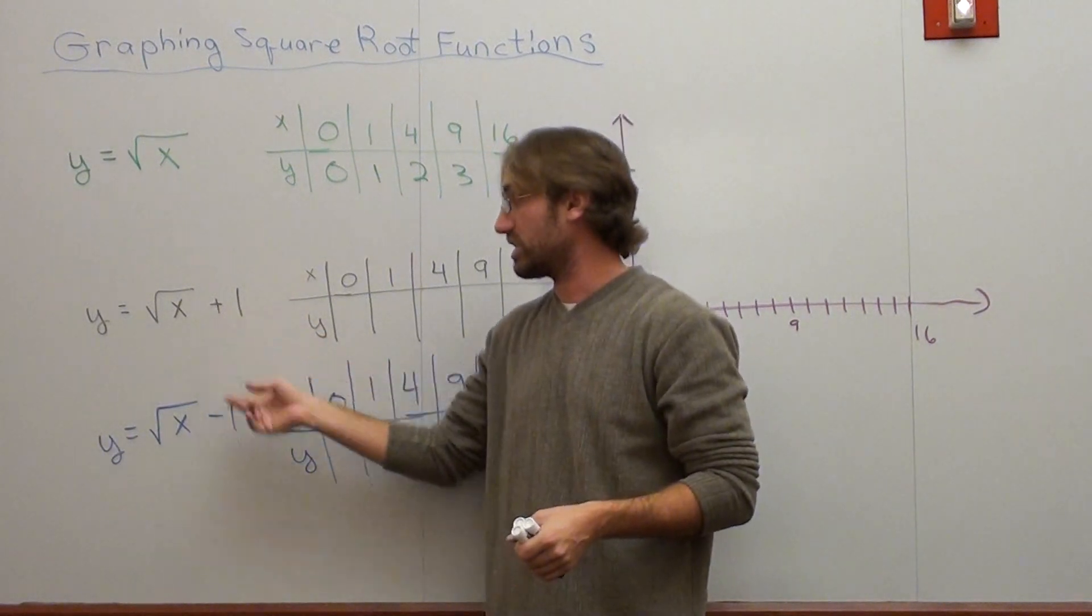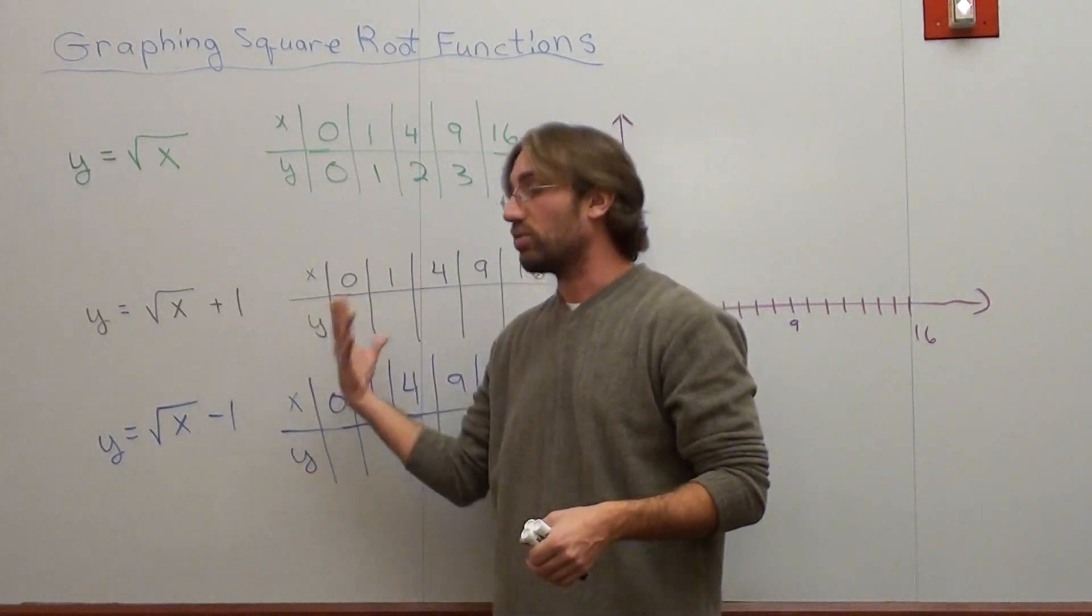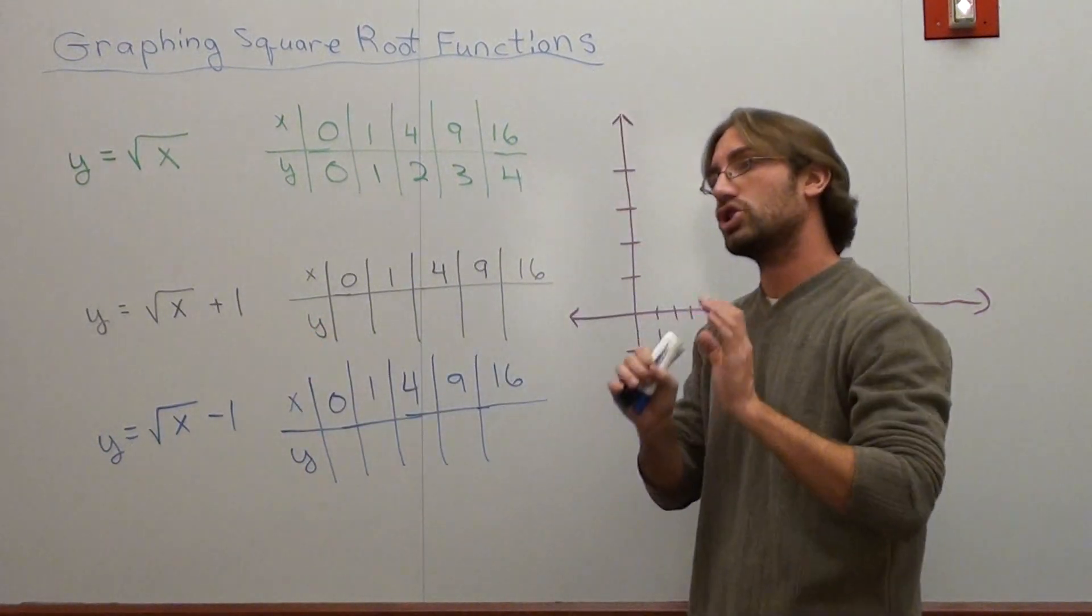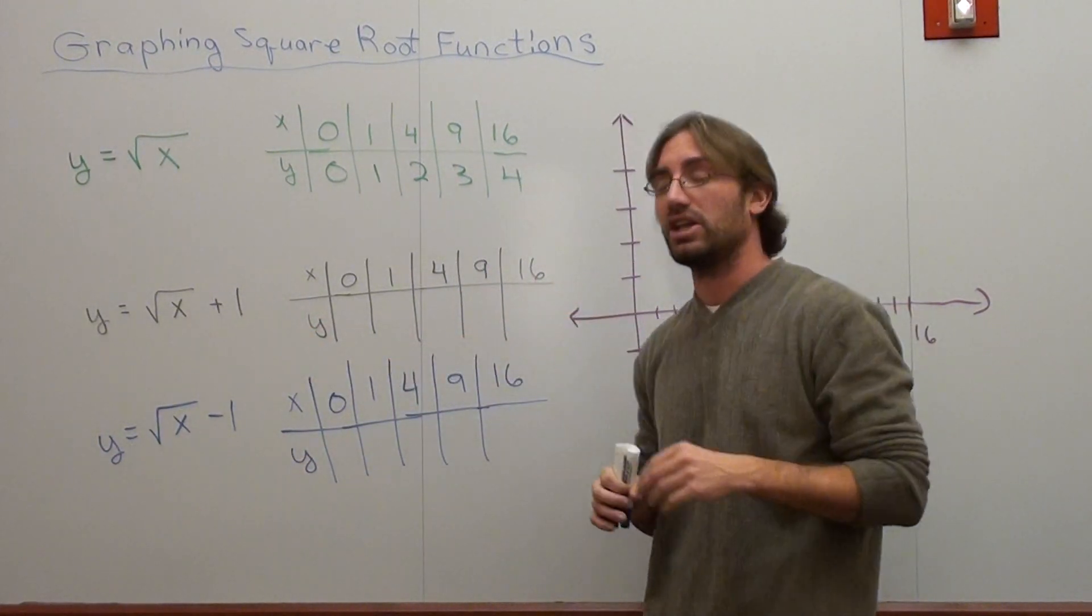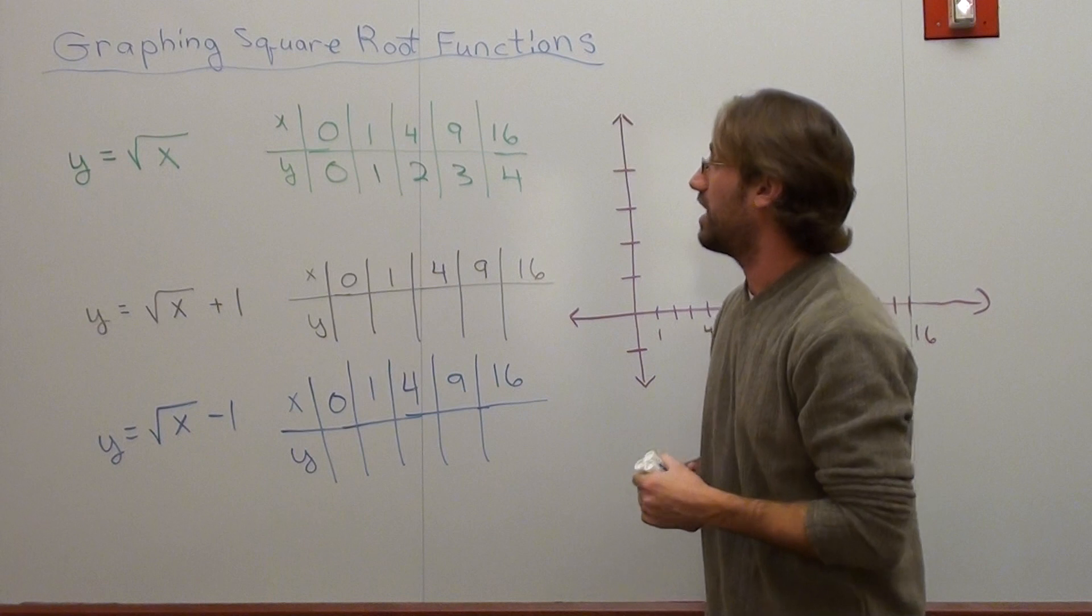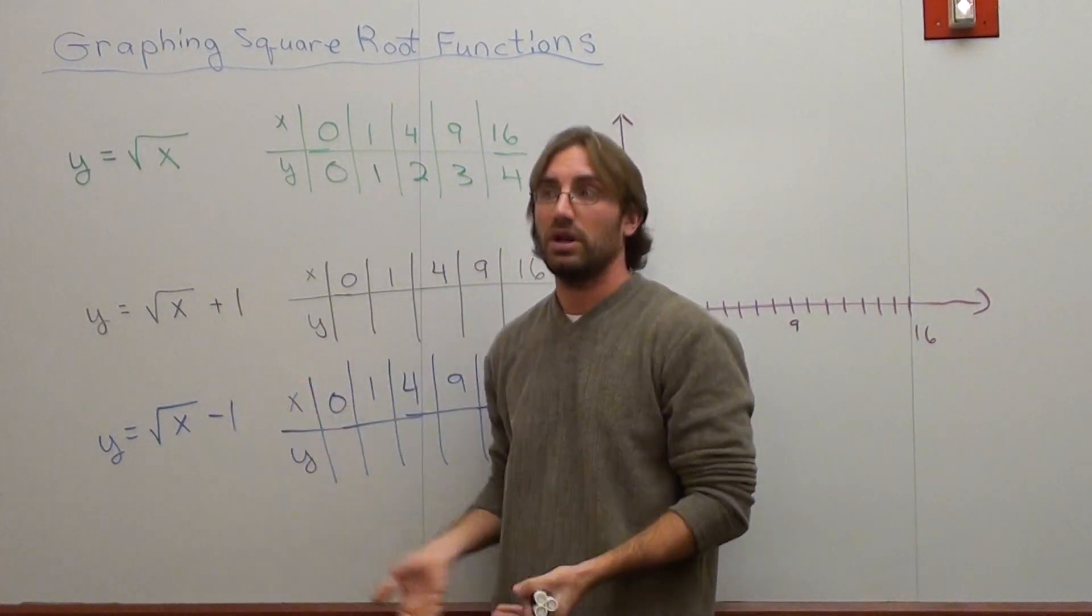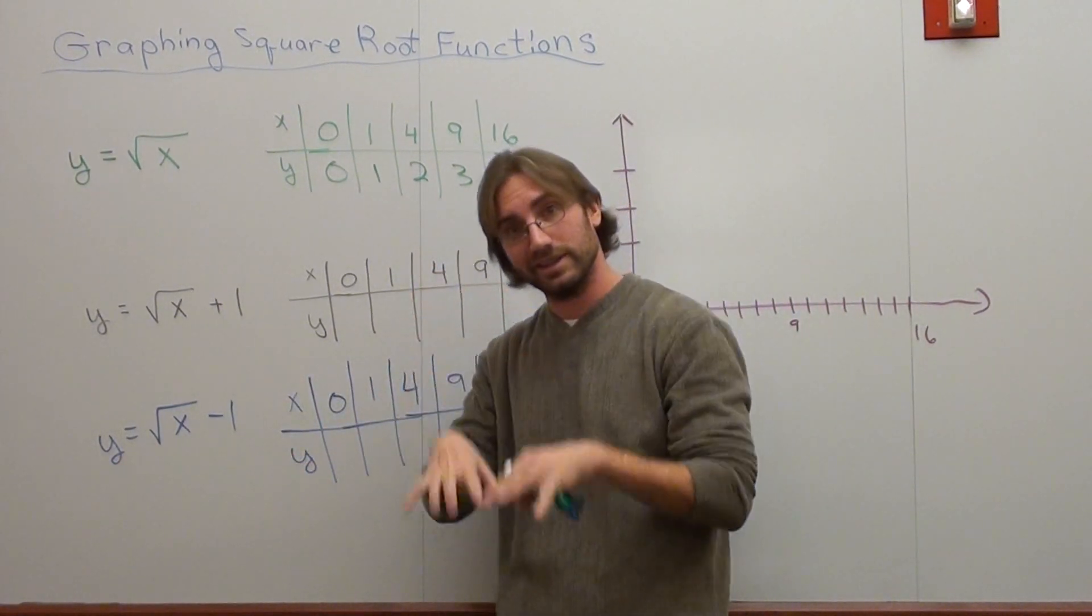When we have a number outside the square root of x, on the right side of the equation, where we're adding or subtracting, it doesn't shift horizontally, it shifts the graph vertically. This one's going to shift the graph 1 up, and this one's going to shift the graph 1 down.